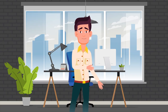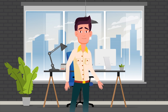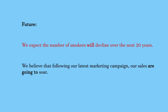The final tense that we will deal with is the future, which we use to describe forecasts or predictions that we think will happen in the future. The will future describes more spontaneous actions, whereas the going-to future is for more certain actions. However, for future predictions, both will and going-to are very similar. Here are two examples. We expect the number of smokers will decline over the next 20 years. We believe that following our latest marketing campaign, our sales are going to soar.